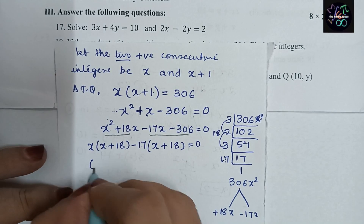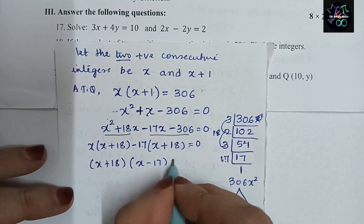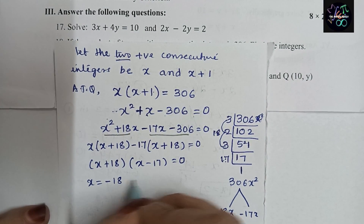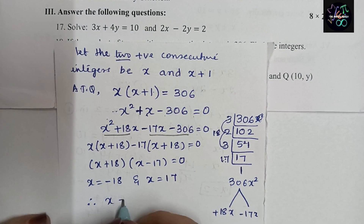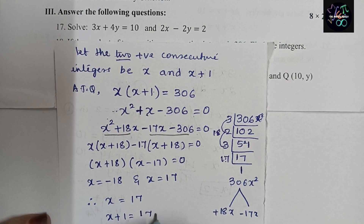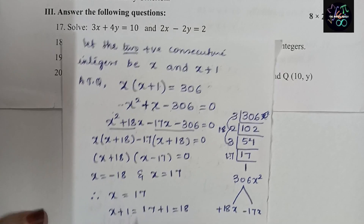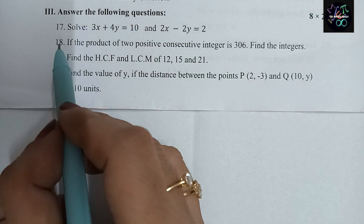From (x + 18)(x − 17) = 0, we get x = −18 or x = 17. Since the question says positive integers, x = 17. Therefore x + 1 = 17 + 1 = 18. The two consecutive integers are 17 and 18. This completes question number 18.